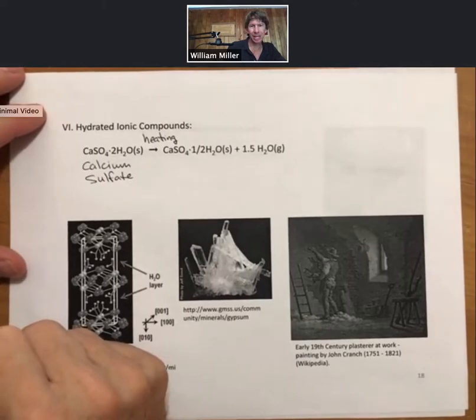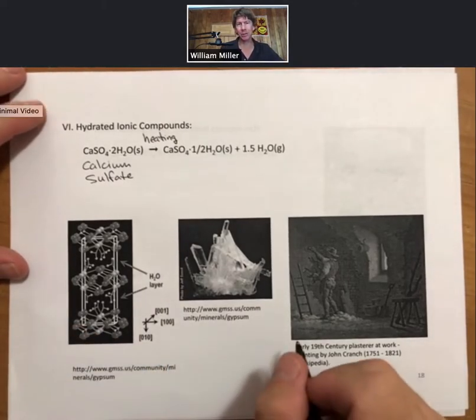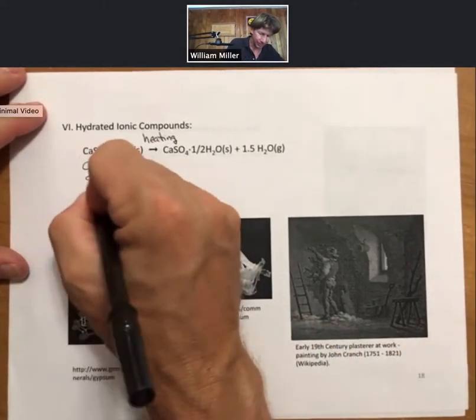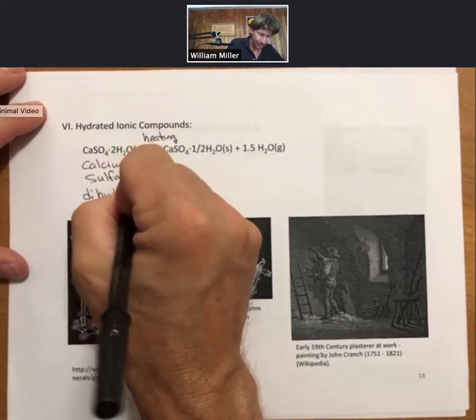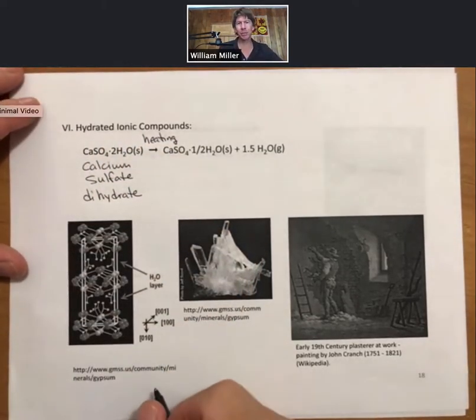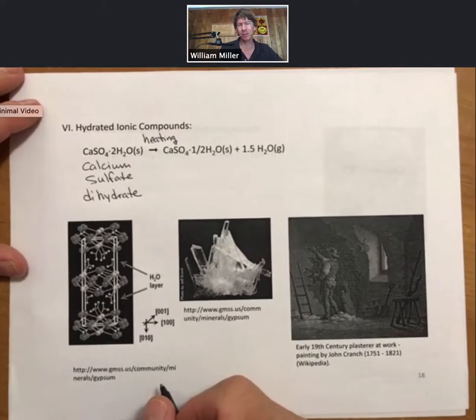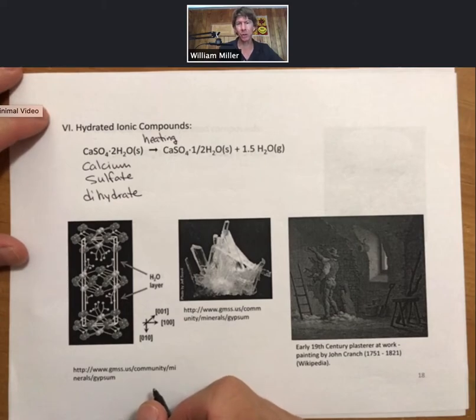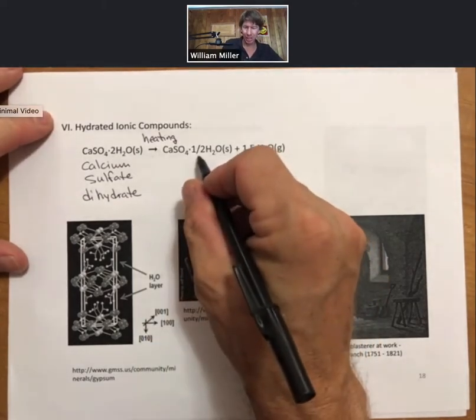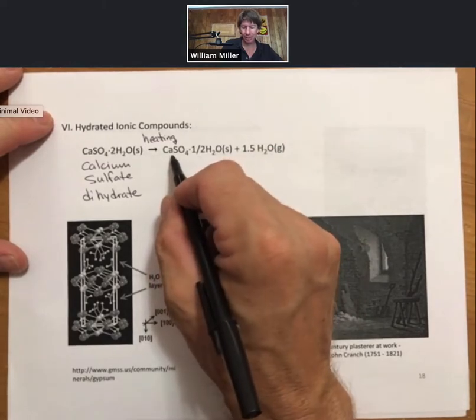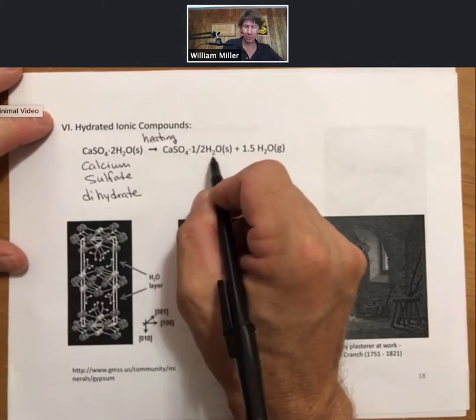Calcium sulfate dihydrate, where dihydrate is one word. And the number prefixes we learned for binary molecular compounds totally work for these as well. Only thing is, there's an additional one when I wrote hemi before. It's only for hydrates. This is going to be calcium sulfate hemihydrate.